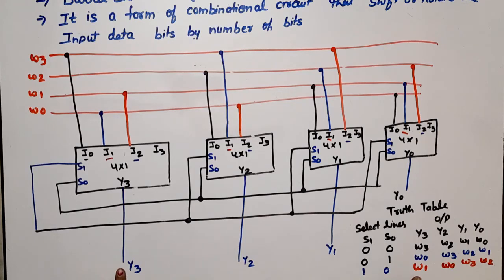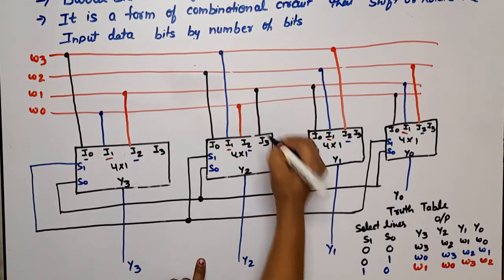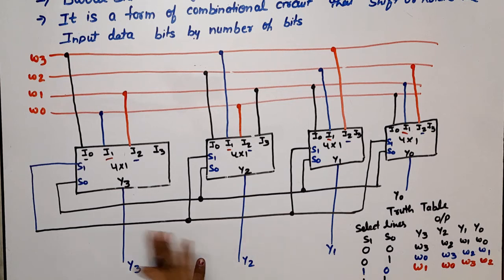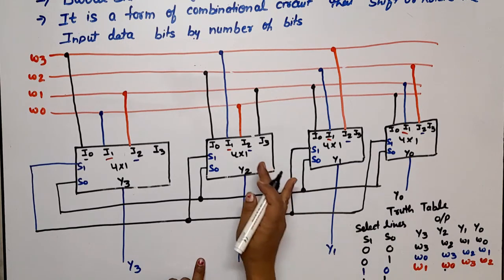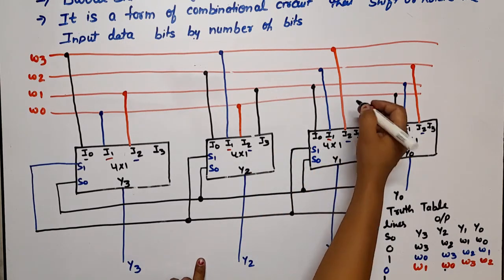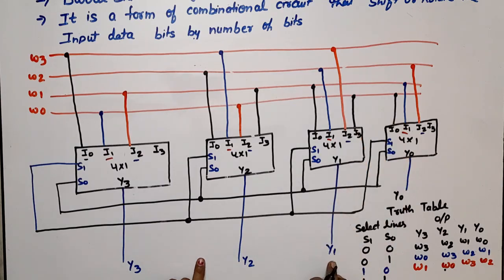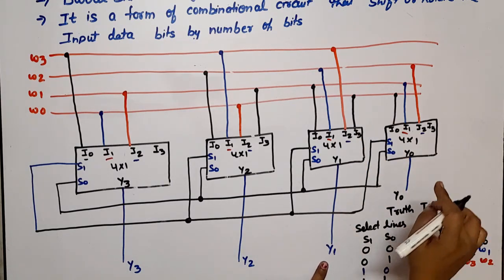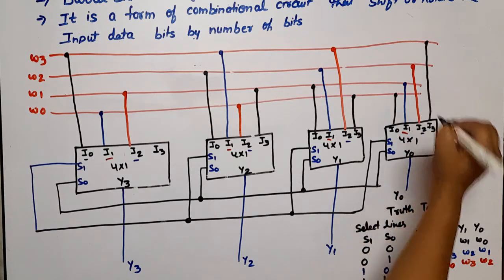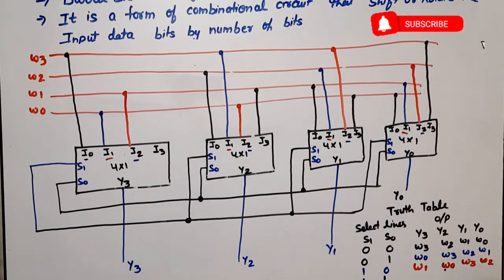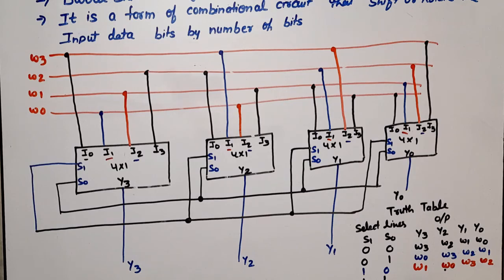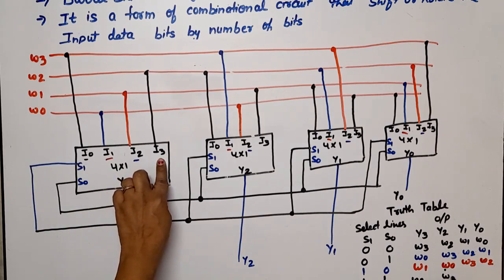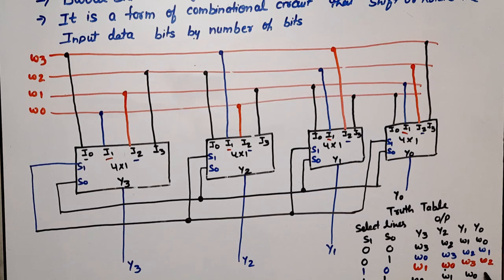When S1=1, S0=1, the I3 input is selected. Y3 gets W0, Y2 gets W3, Y1 gets W2, and Y0 gets W1. This completes the table — a right rotation by three bits gives output W0, W3, W2, W1. So you can see that our right shifting is demonstrated here. If you want left shifting, you connect the inputs accordingly and shift in the opposite direction.